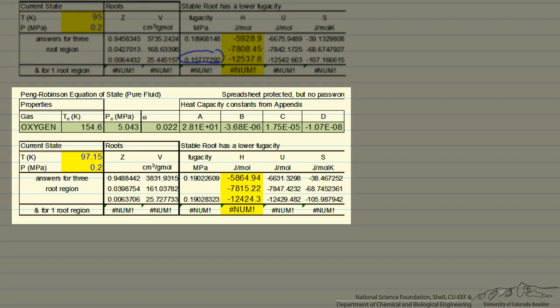Here is the spreadsheet where I've adjusted the temperature such that the fugacity in the vapor phase is identical within four significant figures to the fugacity in the liquid phase. So this is the saturation temperature at this pressure for oxygen. And now we can read off the enthalpy for the vapor phase, the enthalpy for the liquid phase, and we're in between these two.